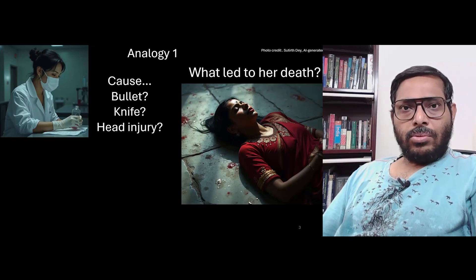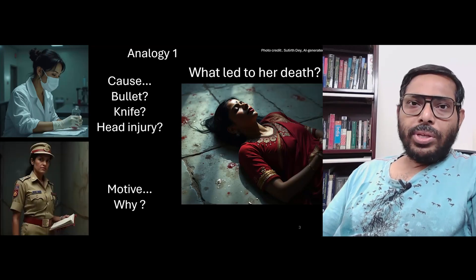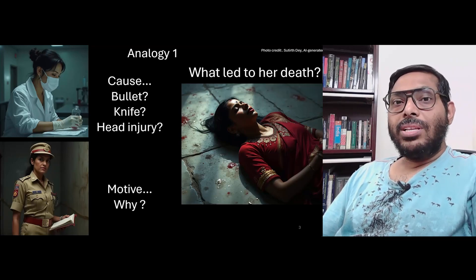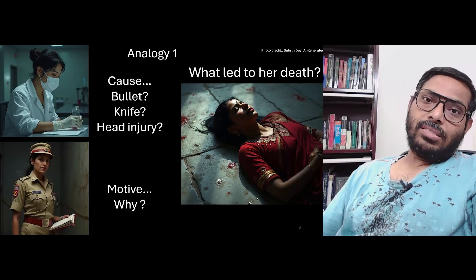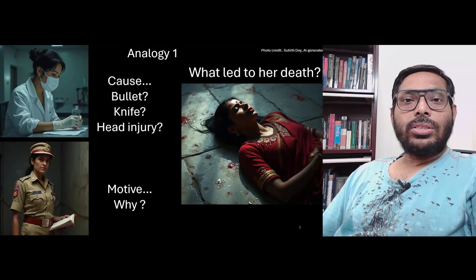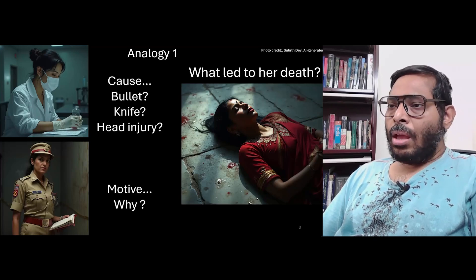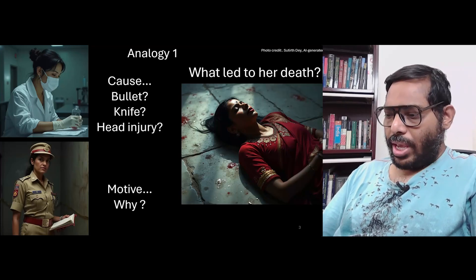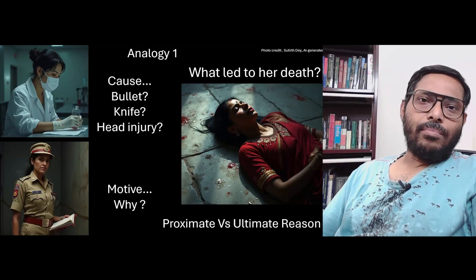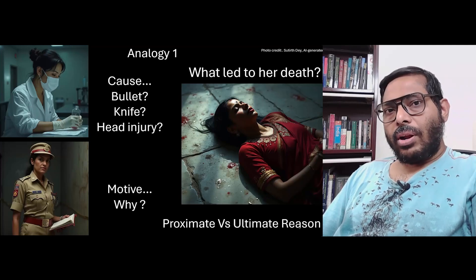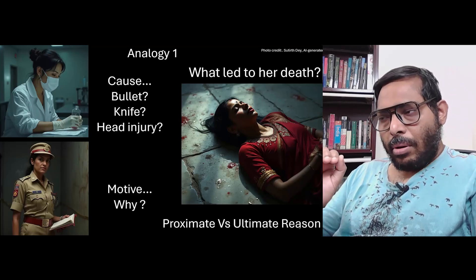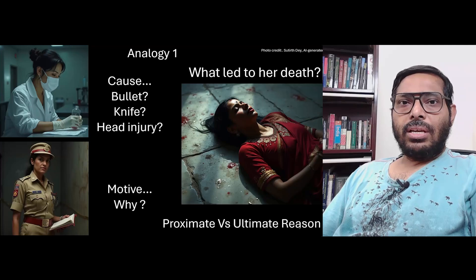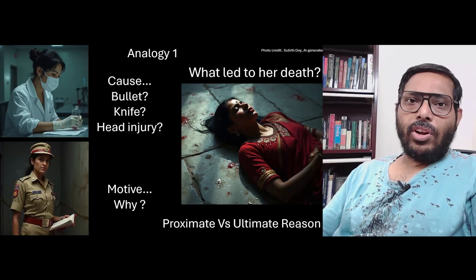The other kind of person you ask is the investigating officer of the case, and she is going to talk about what could be the possible reason behind this lady's death — is it a suicide, is it a murder, what was the motive, and so on. So you can see that the same question about a phenomenon can be answered in two slightly different ways, and this is what is known as the proximate versus ultimate dichotomy.